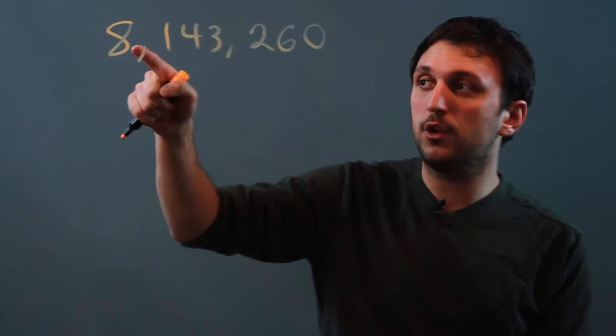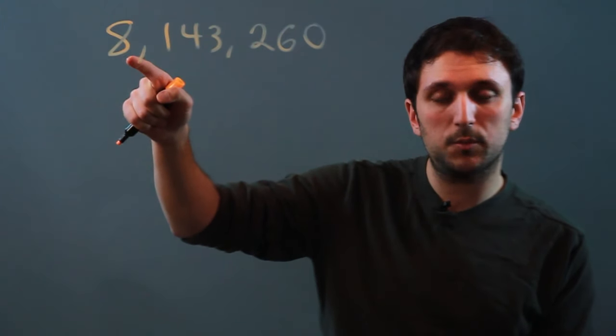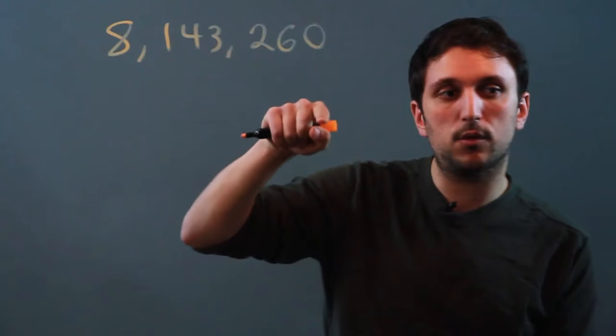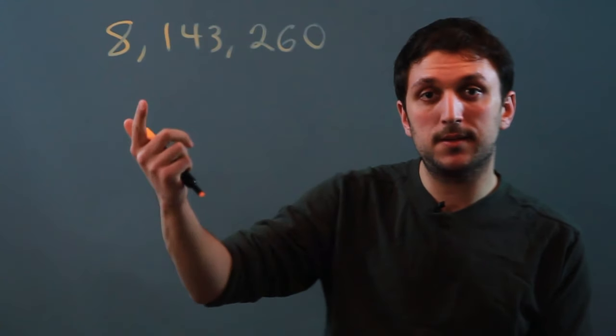we want it to be just 8 before a decimal point, all these other numbers after a decimal, and then we're going to multiply it by 10 to an exponent.